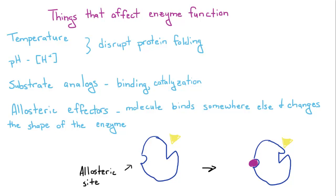And you also have these things called allosteric effectors. These are molecules that bind somewhere else on the enzyme and change the shape of the enzyme. So you can see we have our enzyme here. Binding site. You've also got this thing called the allosteric site.